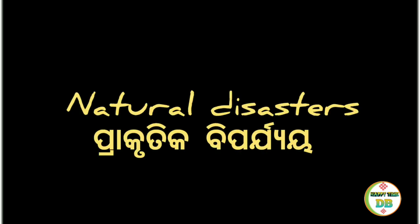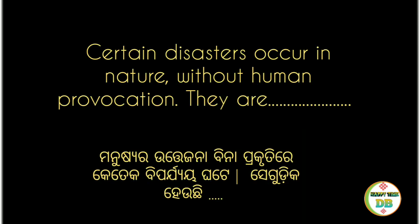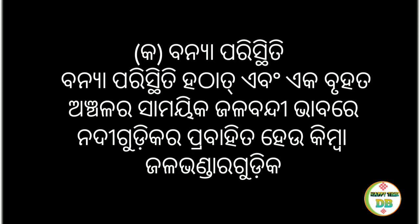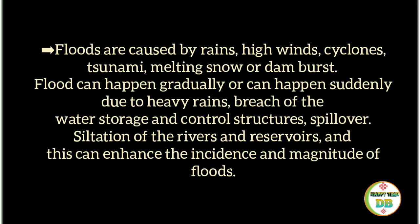Natural Disasters. Certain disasters occur in nature without human provocation. Floods are a sudden and temporary inundation of a large area, such as an overflowing of rivers or reservoirs. Floods are caused by rains, high winds, cyclones, tsunamis, melting snow, or dam bursts, and can happen gradually or suddenly due to heavy rains, breach of water storage and control structures, spillover, and siltation of rivers and reservoirs.